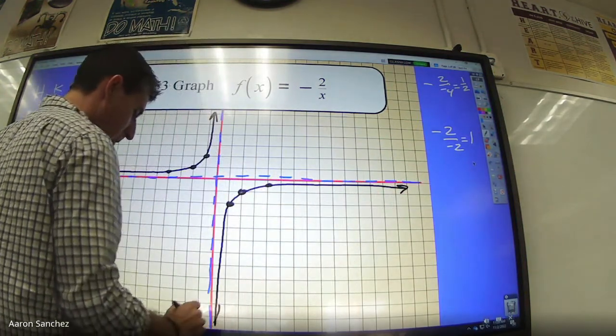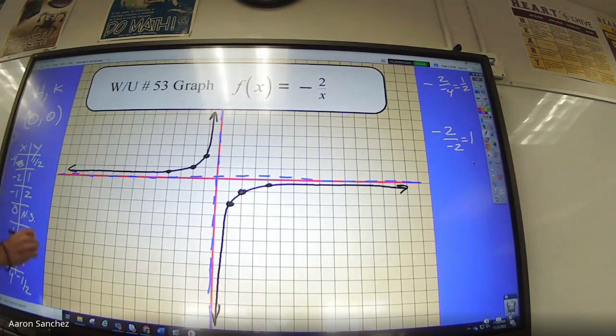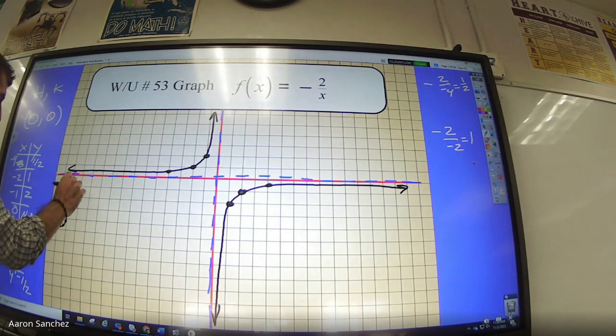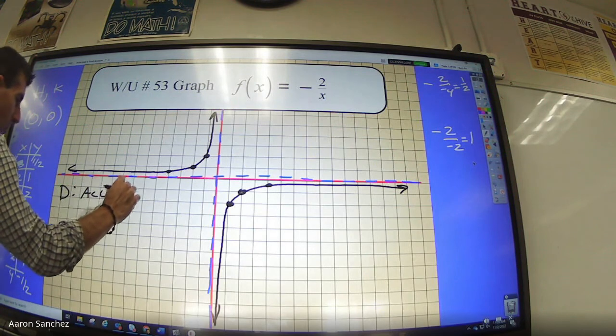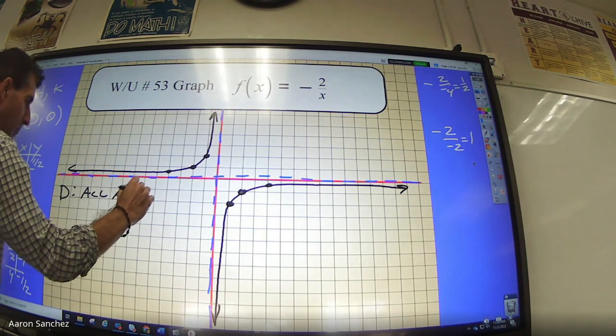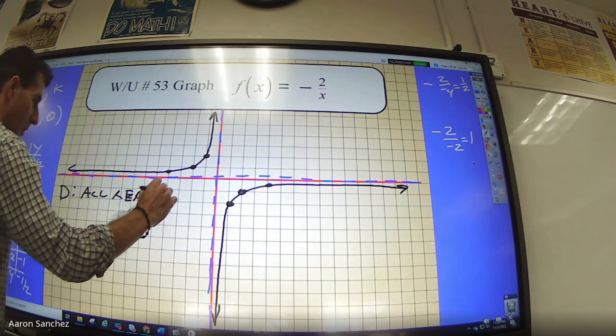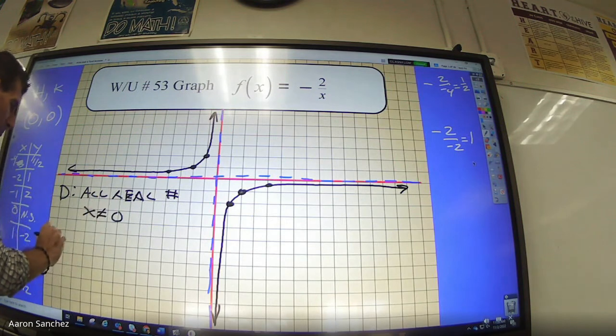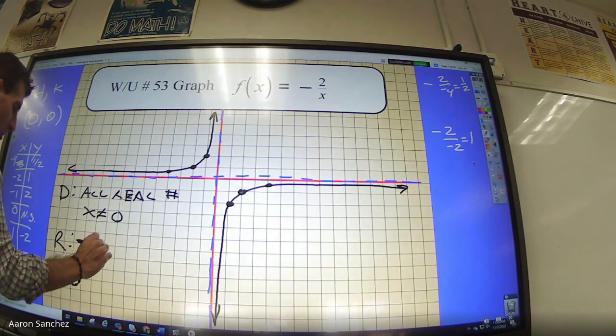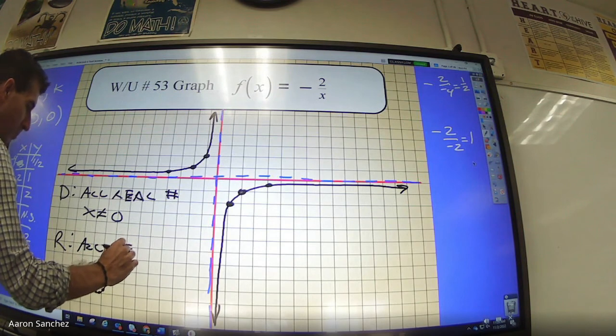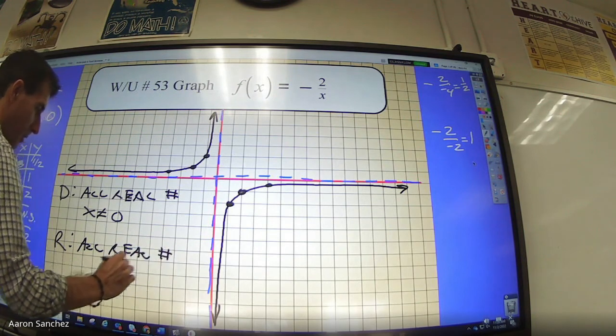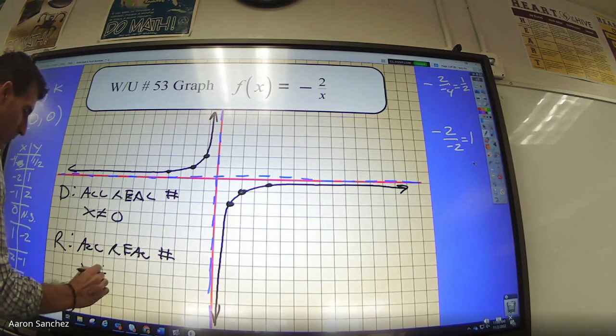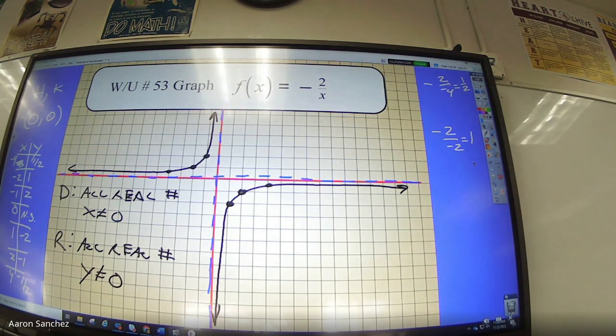I may ask you the domain and range. Domain: all real numbers except X cannot be at 0. Range: all real numbers except Y cannot be 0. And that's all you've got to do.